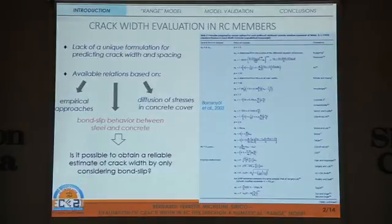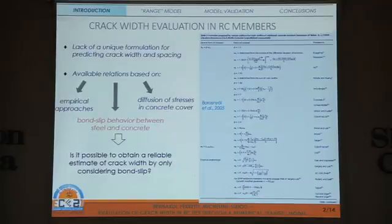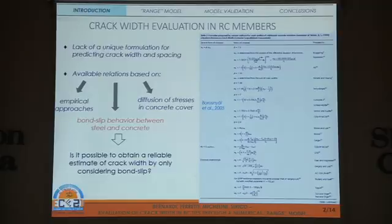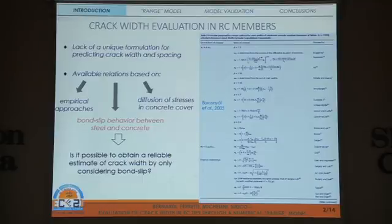Despite a large number of studies carried out in the past on this topic, a lack of a unique formulation for predicting maximum crack-width and spacing is proved by the development of more than 20 formulae to predict this variable. Except for empirical approaches, most relations are based on two internal mechanisms: diffusion of stresses in concrete cover and bond slip behaviour between steel and concrete. Maximum crack width is correlated to concrete cover depth in the first case, and to the ratio between rebar diameter and reinforcing ratio in the second. However, it is not clear which of these two contributions is more important.